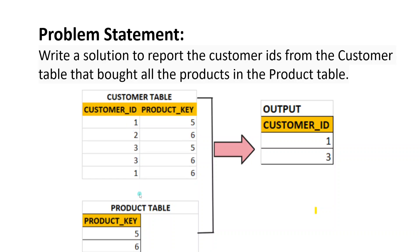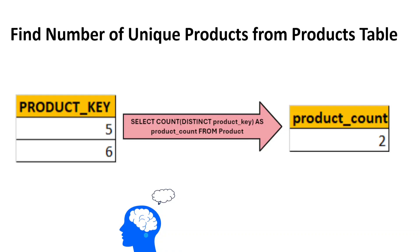From the product table I will have the list of products — in this case it's going to be two. Then I'm going to find the list of customers along with their unique number of products. Customer ID one bought two unique products (five and six), so that count is two. Same for customer three — it would be two. But customer two bought only one product, so it's going to be one. Now it's easy to compare: whichever customer's unique product count matches the unique product count from the product table, I can match that using either a join or a filter.